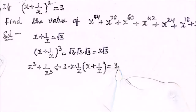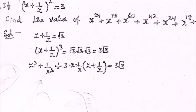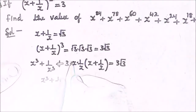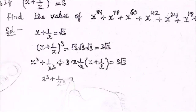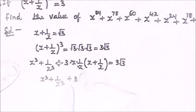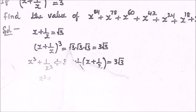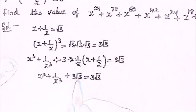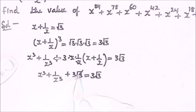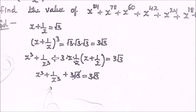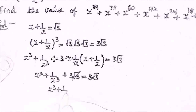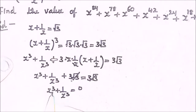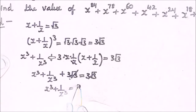This is equal to 3 root 3, so x cube plus 1 upon x cube — the x terms cancel and we are left with 3 here, and x plus 1 upon x is given as root 3. So 3 root 3 is the same on both sides, it gets cancelled, and we are left with x cube plus 1 upon x cube is equal to 0.